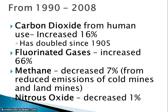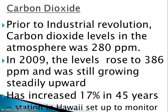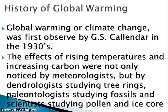Some facts: from 1990 to 2008, carbon dioxide increased about 16%, and since 1905 it has actually doubled. Fluorinated gases increased 66%. Methane has decreased, and nitrous oxide has decreased. For carbon dioxide specifically, prior to the industrial revolution, levels in the atmosphere were at 280 parts per million. By 2009, it increased to 386 parts per million, and it's still growing rapidly — a 17% increase in those 45 years.